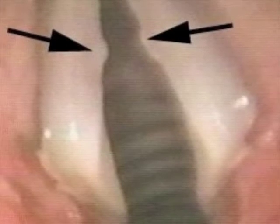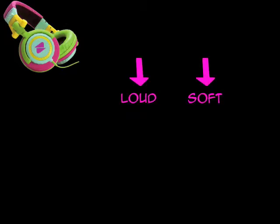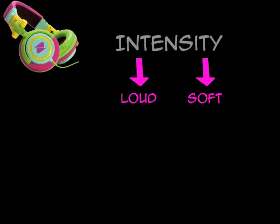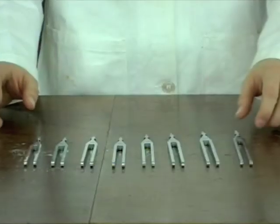Just like with everything else, there are some key words to understand about sounds. Some sounds are loud and some are soft — this is the intensity of the sound. Sounds with a high intensity are said to have a high volume. Sounds can also be high or low — this is the pitch of the sound.